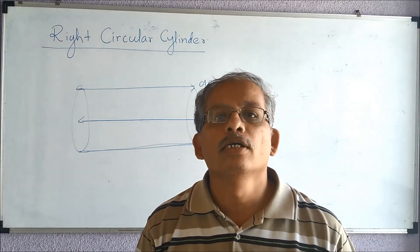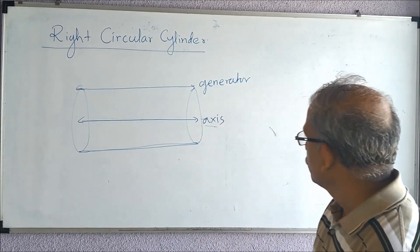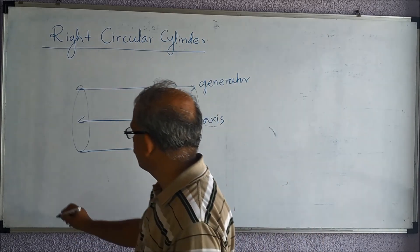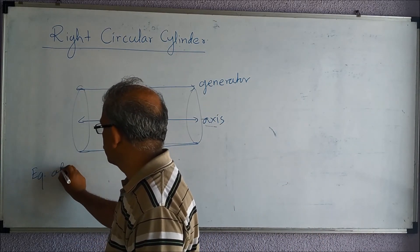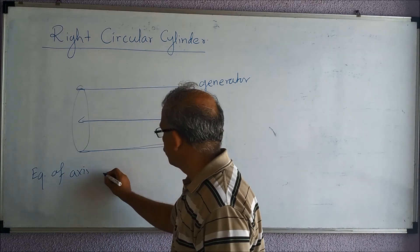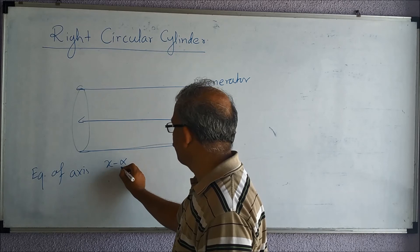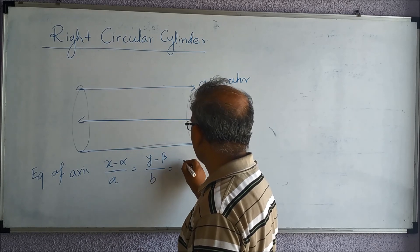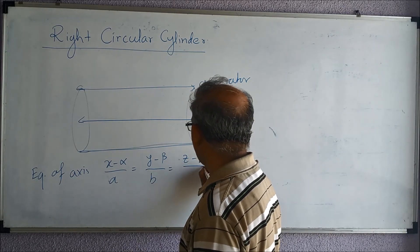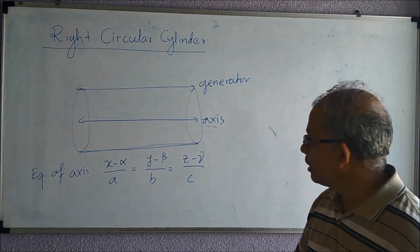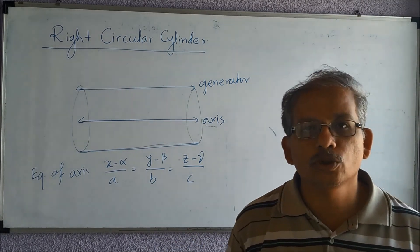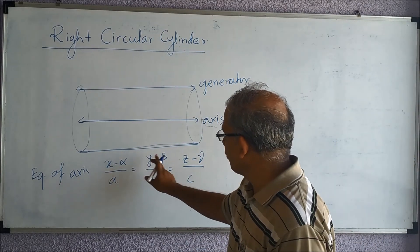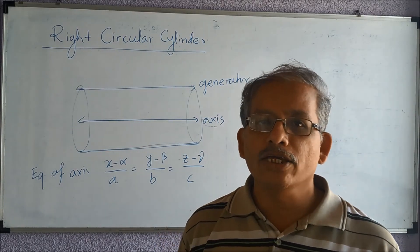Suppose the equation of the axis is given as: (x − α)/a = (y − β)/b = (z − γ)/c, where a, b, c are the direction ratios of the axis, and α, β, γ is any one point lying on the axis.